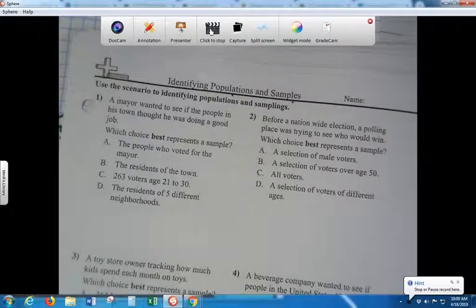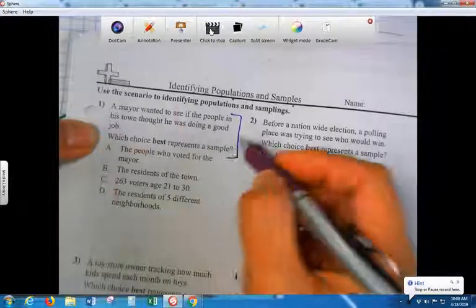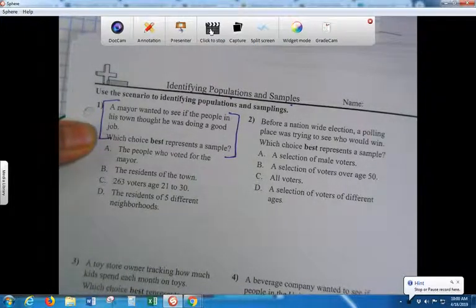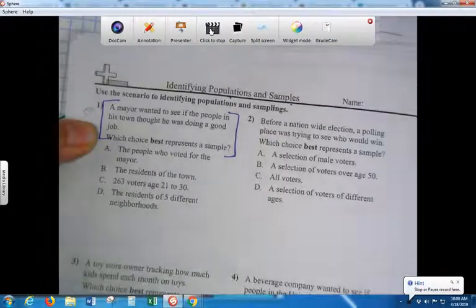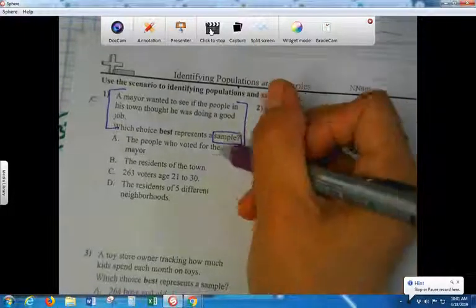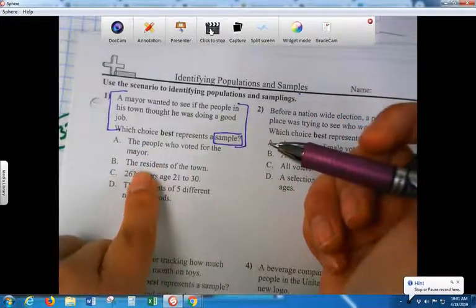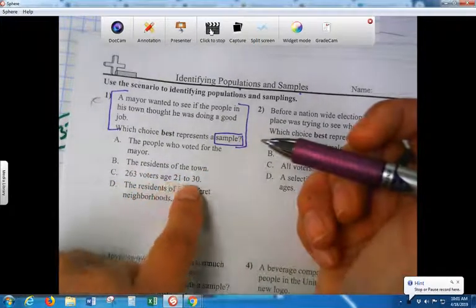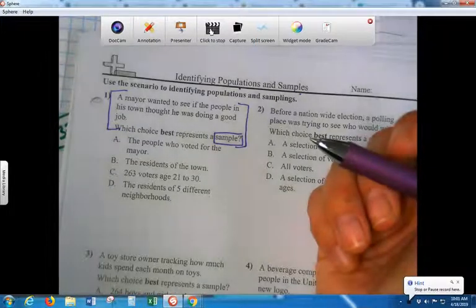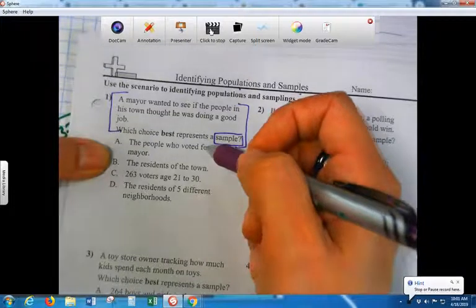Okay, so I semi-started it. Let's do number one. Okay, Gabriela, can you read this part while team seven is listening attentively? So let's box sample. Is that everybody or a small part? Small. So now we're going to read the choices and we're looking for a small group of people, not everybody. The people who voted for the mayor, the residents of the town, 263 voters ages 21 to 30, the residents of five different neighborhoods.